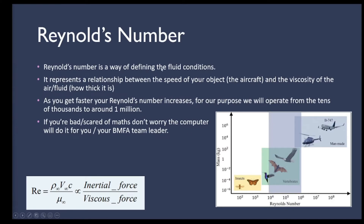Reynolds number is a way of defining fluid conditions — it looks at inertial versus viscous forces in the fluid. Inertial forces relate to the speed or energy of the flow: a fighter jet traveling very fast has a very high Reynolds number. Something very viscous like oil, or something traveling slowly like an insect, has a low Reynolds number. We'll typically operate in a range from the tens of thousands up to about a quarter of a million.